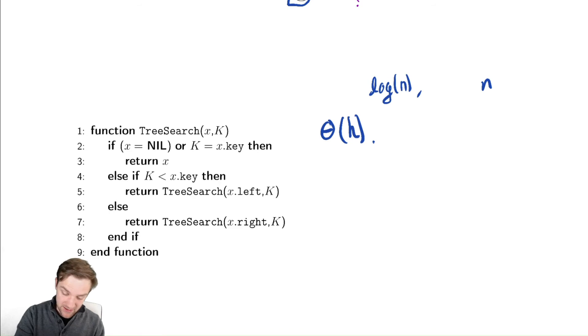So the height is not going to be easily characterized for a normal binary search tree without more understanding of its structure. This will be typical of lots of algorithms. They will depend on the height, and this dependence cannot be further simplified.